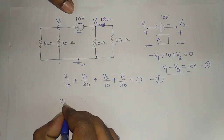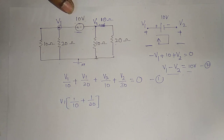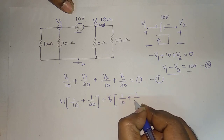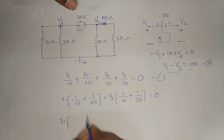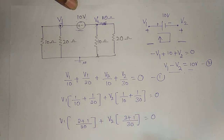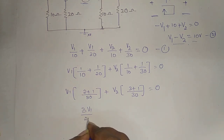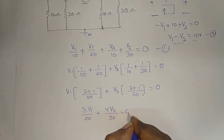We will solve these equations. V1: the common factor gives 1 by 10 plus 1 by 20. V2: the common factor gives 1 by 10 plus 1 by 30, all equal to 0. LCM is 20, giving 2 plus 1. For V2, LCM is 30, giving 3 plus 1, equal to 0. So this equation is 3V1 by 20 plus 4V2 by 30 equals 0.